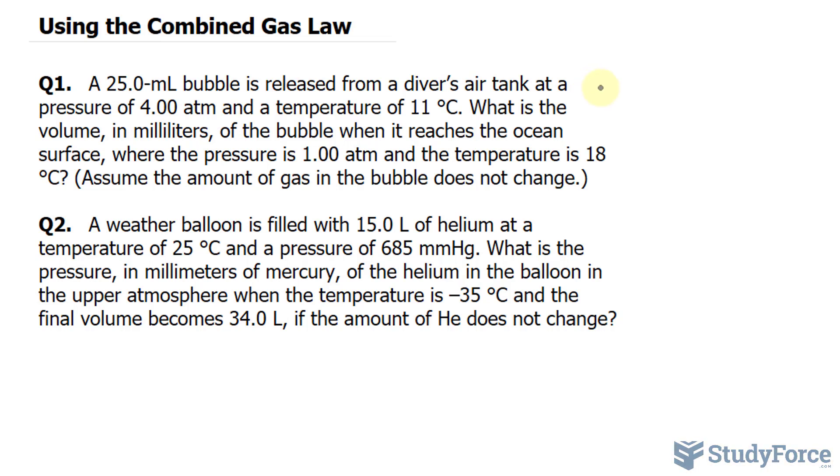So combining all of that together, we can write down P₁ times V₁ over T₁ is equal to P₂ times V₂ over T₂. And temperature in these types of formulas needs to be converted into Kelvin, so just keep that in mind as you use them.